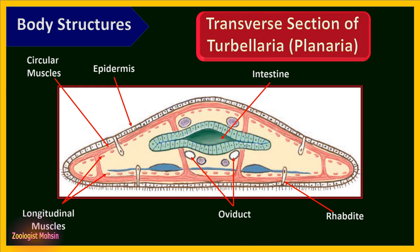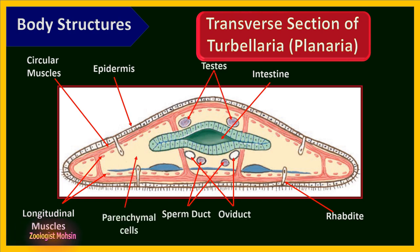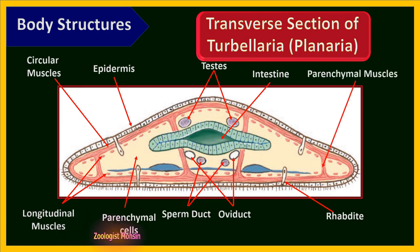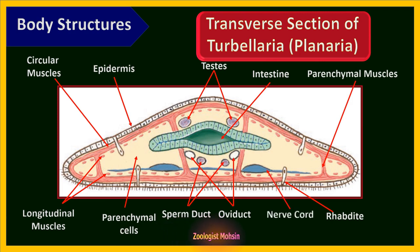On the ventral side of the gut are oviducts and sperm ducts, while testes are present on the dorsal side. The area between the epidermis and gastrodermis is filled with parenchymal cells, roughly distributed throughout. Parenchymal muscles on the lateral sides hold the upper and lower layers together. A nerve cord with ganglia is also present on the ventral side of the gastrodermis for coordination.